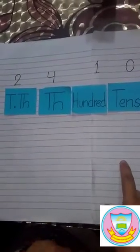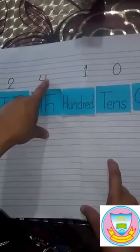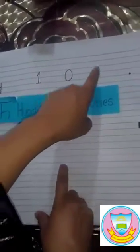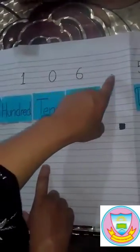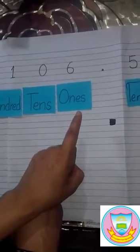Okay students, first we solve our example. Our question is 24106.568. Our question is in decimal form.